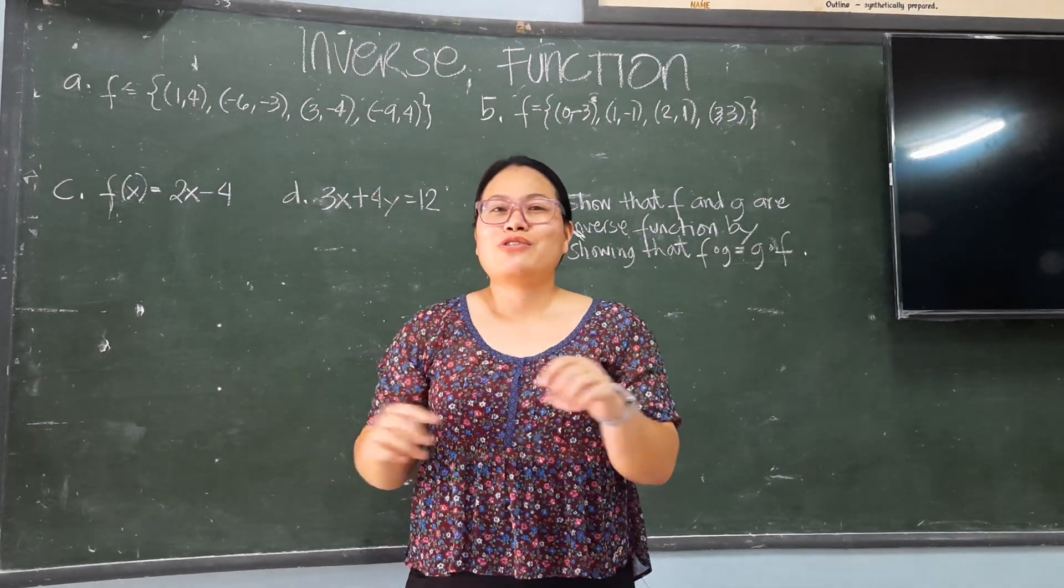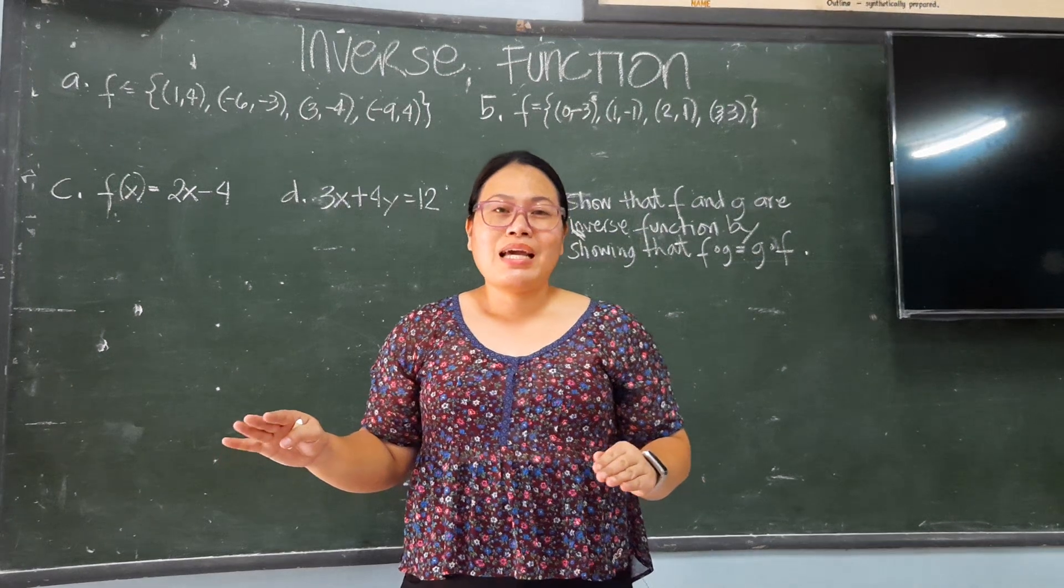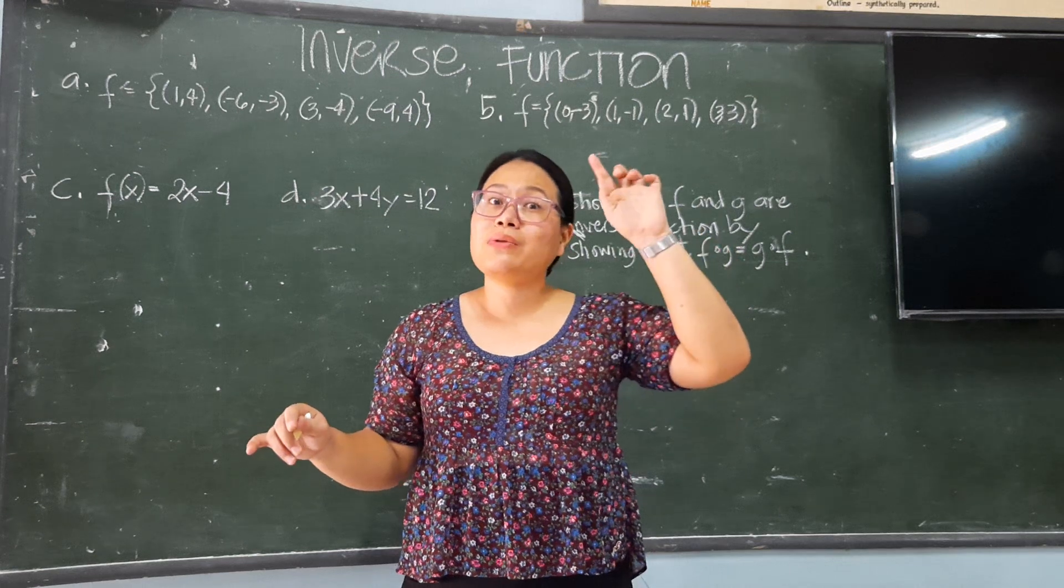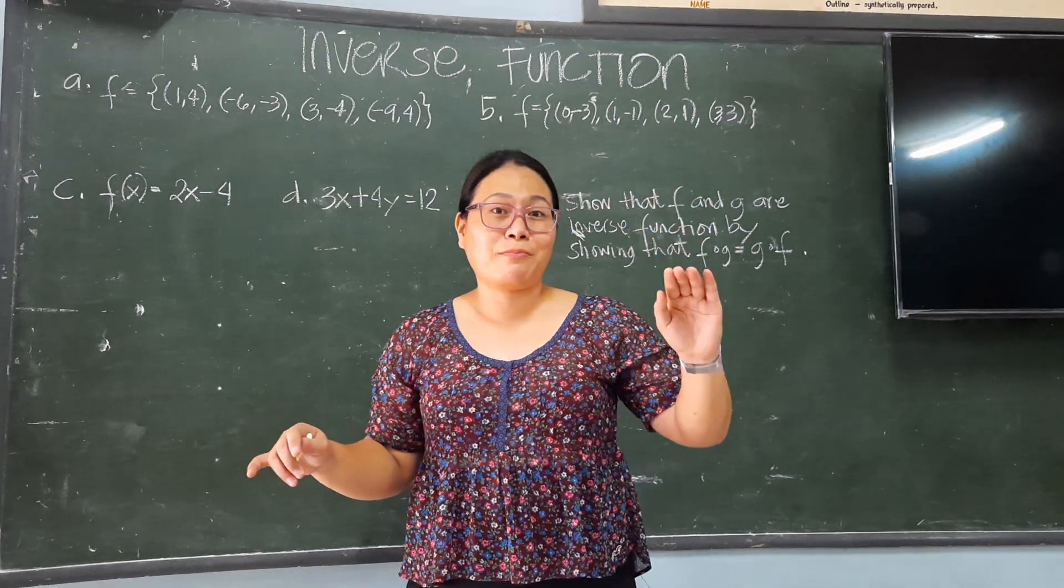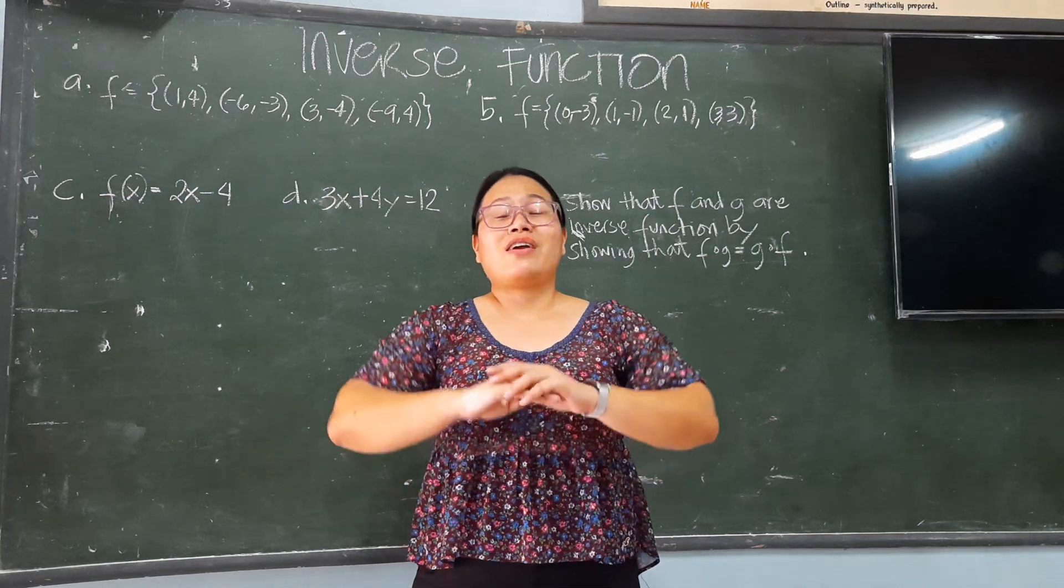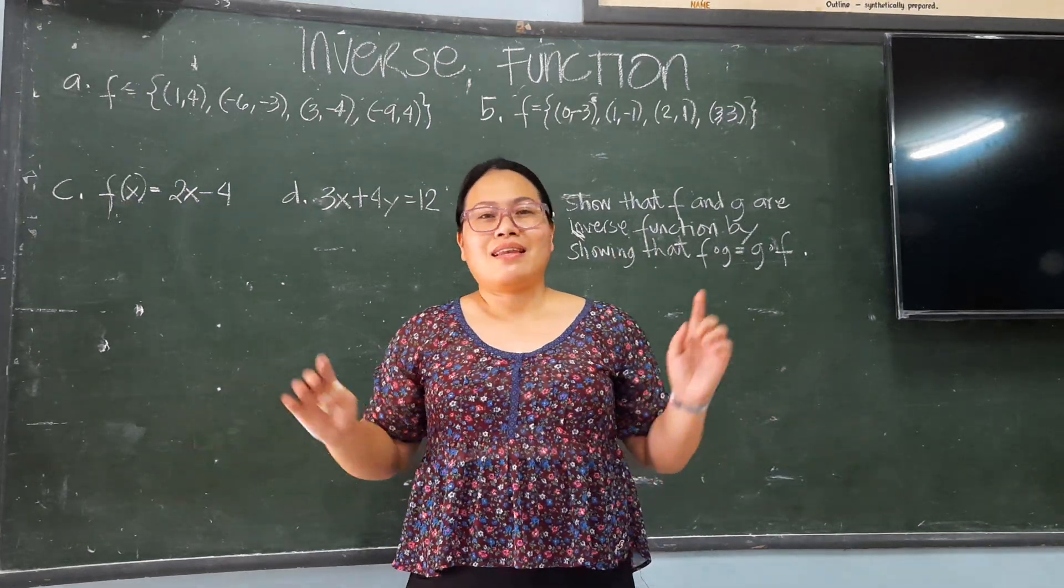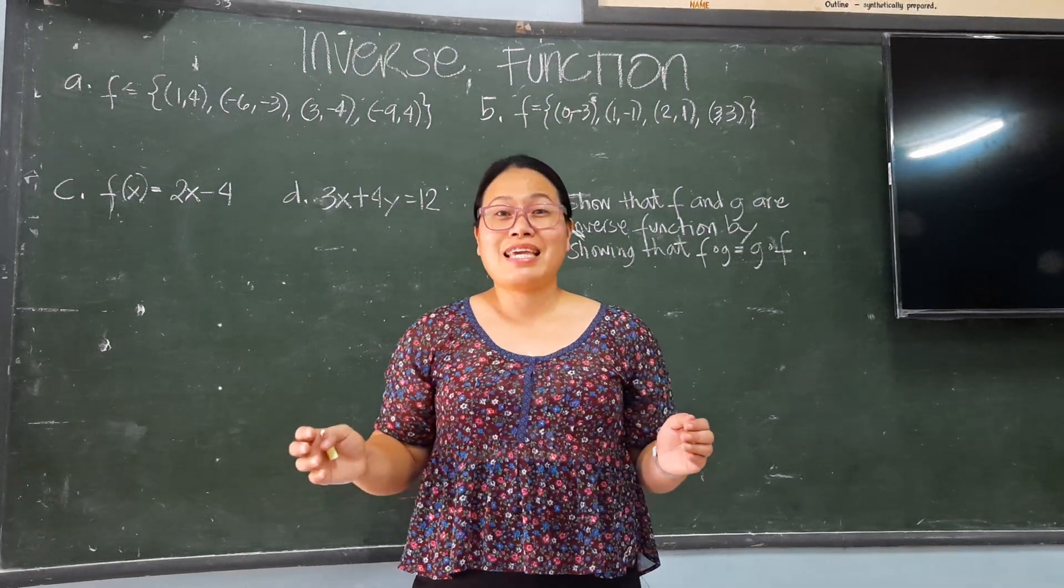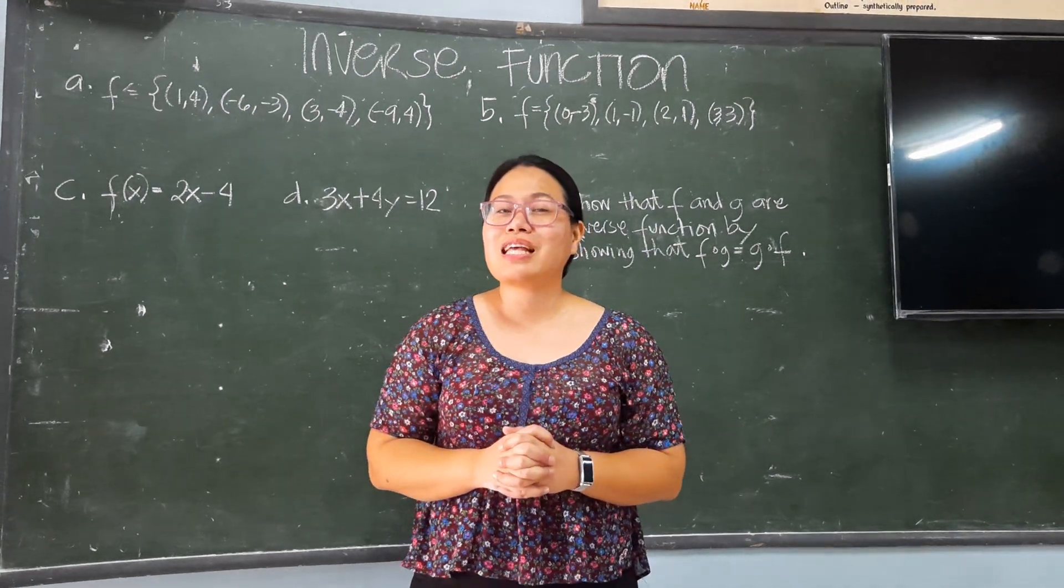For this week we will only focus on inverse functions and the one-to-one function. Another term for one-to-one: make sure that the exponent is an odd number. A one-to-one function has an odd exponent. If there is an even exponent, then it is not a one-to-one function.